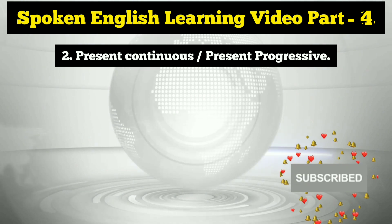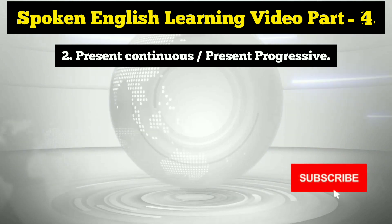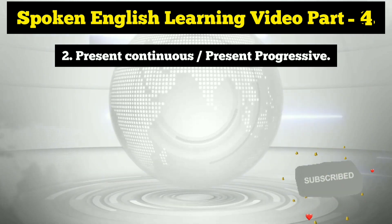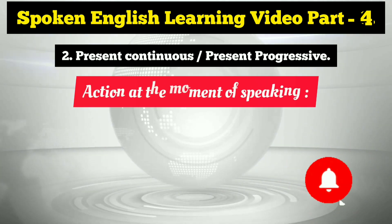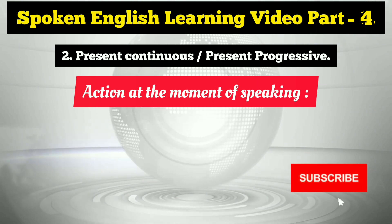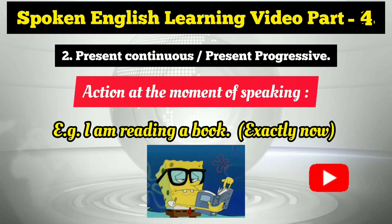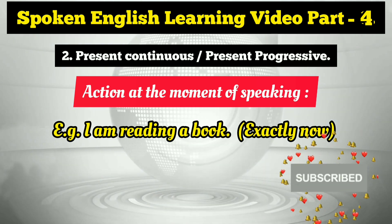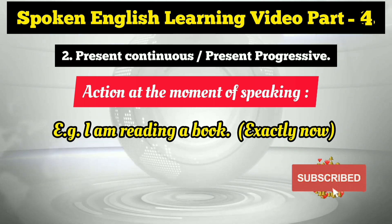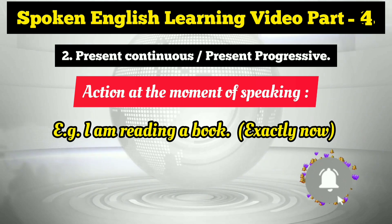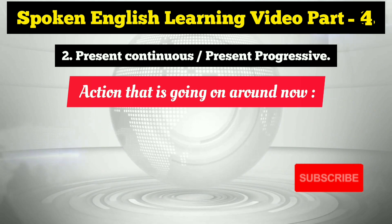Now let's dive into the present continuous tense, which is also called the present progressive. We use the present continuous tense to talk about an action at the moment of speaking. For example: 'I am reading a book.' This means exactly now, at this moment, I am reading a book. You use it when describing something you are doing right now.